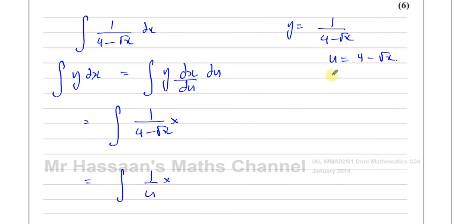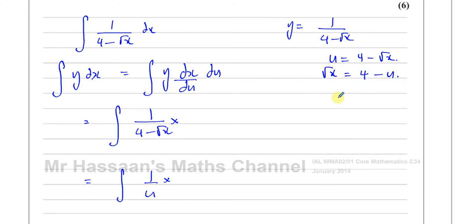Now I need to find dx/du. In previous questions I found du/dx and then took the reciprocal. But in this case, du/dx gives something in terms of x, and dx/du would also be in terms of x — I'd then have to substitute back. It would be a bit complicated, so what's easier here is to make x the subject first and then find dx/du. I'll add root x to both sides, take away u, then square both sides, giving x equals 4 minus u squared.